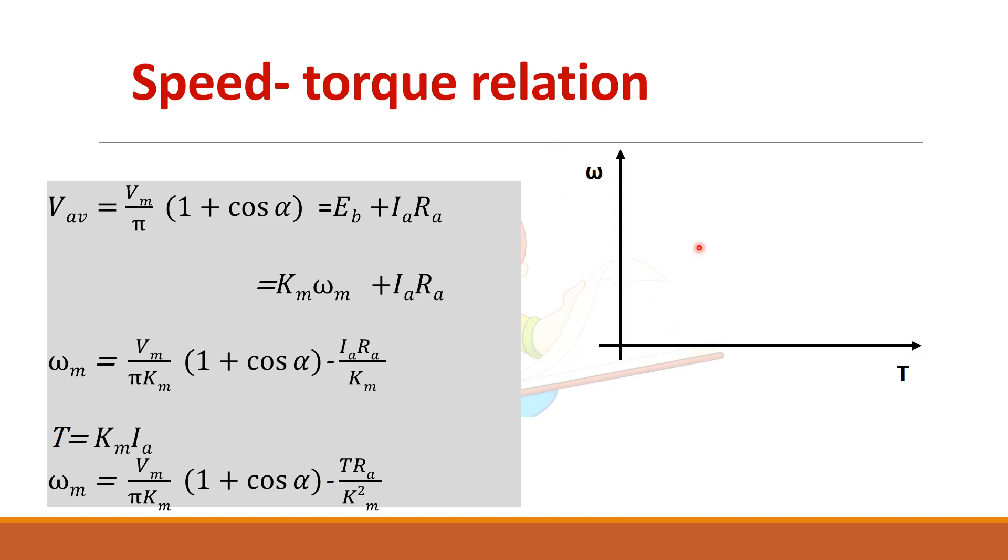So speed torque is here. If you plot it you will get like this. This indicates that at increasing alpha your characteristics is like this. And you will get only one quadrant operation in case of a semi-converter.